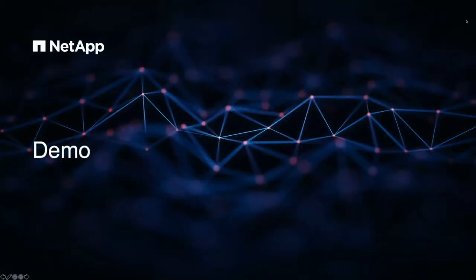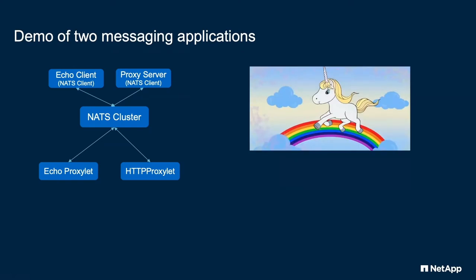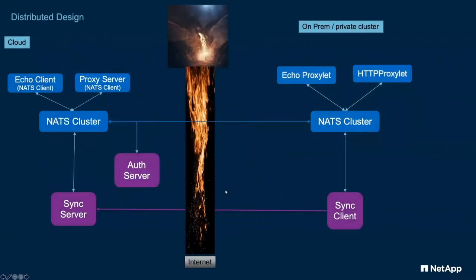Let's get into the demo. What we're demoing is the two messaging samples: the echo client talking to the echo proxlet, and the proxy server talking through the NATS system to the HTTP proxlet on the client network. This is what I call the unicorn and rainbow view — client talking to client, simple. But in reality, as we send an echo message, it goes to the NATS cluster, gets picked up by the sync server, passes over to the sync client, back to another cluster on the on-prem side, and finally to the echo proxlet.